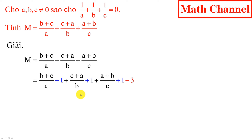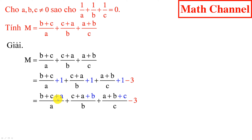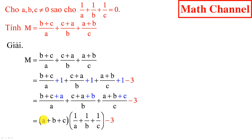Tiếp theo quy đồng mẫu mỗi phân thức với 1, ta được: tổng (B+C+A) chia A, cộng tổng (C+A+B) chia B, cộng tổng (A+B+C) chia C, trừ 3. Đến đây ta thấy 3 phân thức mới có cùng tử là tổng A+B+C, cho nên rút nhân tử chung ở tử ta được: (A+B+C) nhân cho (1 phần A cộng 1 phần B cộng 1 phần C) trừ đi 3.